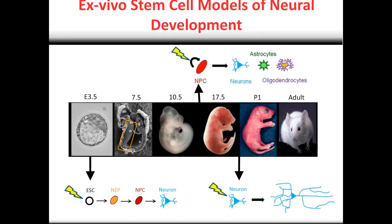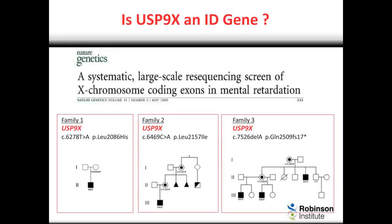To highlight the use of all three of these systems, I wanted to discuss our studies on a gene called USP9X. We first became interested in this gene in 2009 when a publication identified variants in this gene in three separate families coming from individuals with intellectual disability. At that point there was really little known about this gene's role in brain development, and so we weren't sure whether the variants in this gene were actually pathogenic or not.